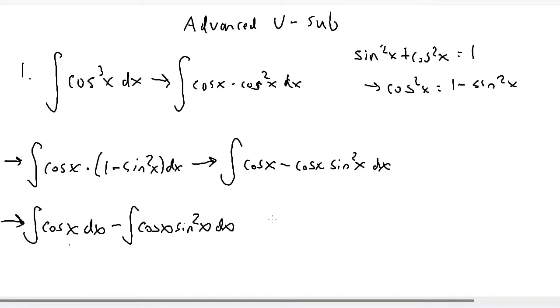This one is pretty easy because we already know the integral of cosine x is sine of x. So we can write sine of x, minus the integral — let me rewrite the integral of cosine x sine squared x.